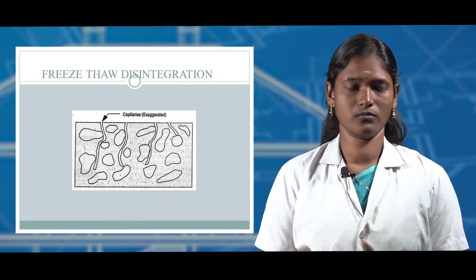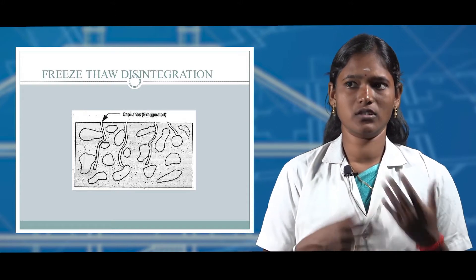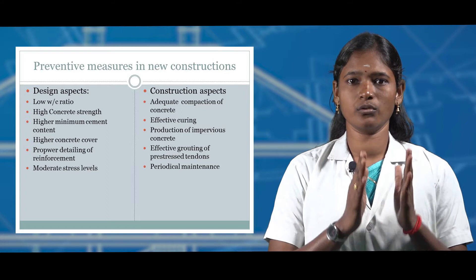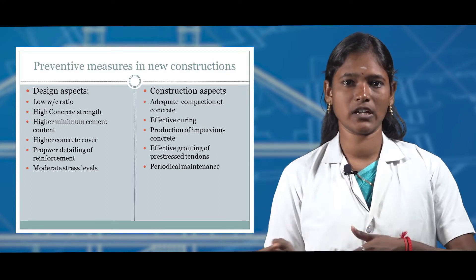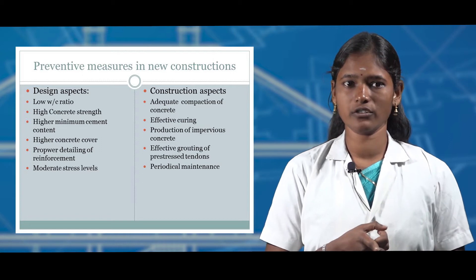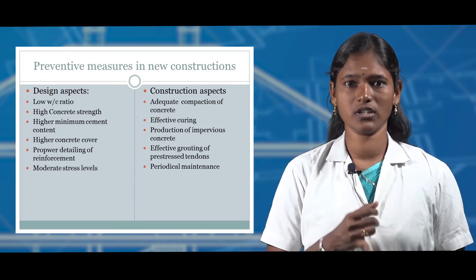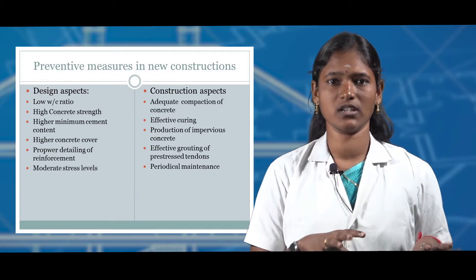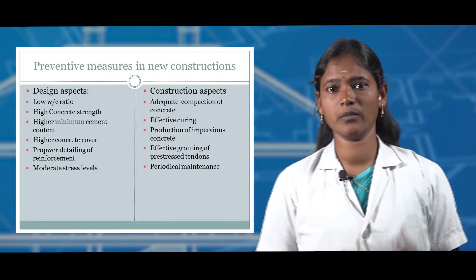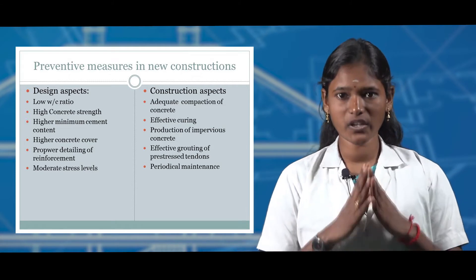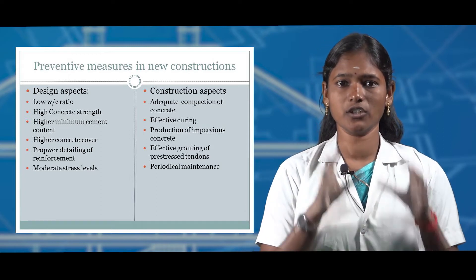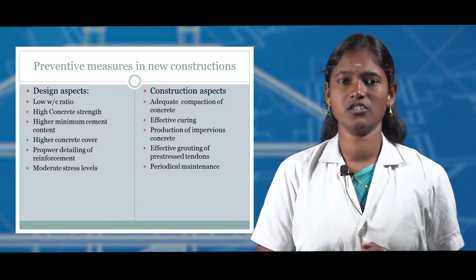Corrosion inhibitors and cathodic protection techniques can be used to prevent steel and concrete corrosion. Preventive measures during construction fall into two categories: design aspect and construction aspect. Under design aspects: low water-cement ratio, high concrete strength, high minimum cement content, high concrete cover, proper reinforcement detailing, and moderate stress levels. Under construction aspects: adequate compaction, adequate curing, protection of impervious concrete, progressive maintenance, and for pre-stressed and prefabricated structures, grouting of the pre-stressed concrete should be done and maintained regularly.